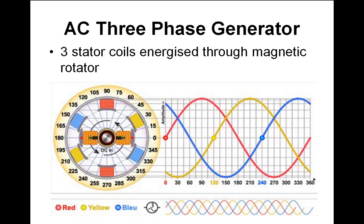If the frequency slows down because the load on the grid is too heavy, they know they need to bring more power stations online. The classic example: when Coronation Street's advertising break came on, millions of kettles were switched on across the country, and the load hit all at once. They sometimes had to kick in extra generators to handle the demand, because letting the frequency drop is a big no-no on the grid.